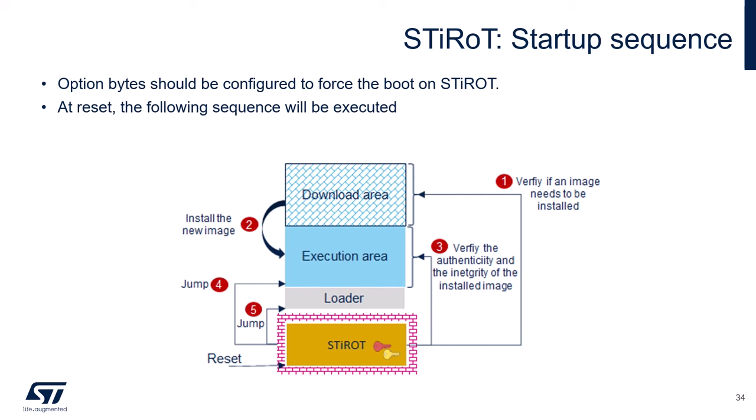Let's now look at the STI-ROT startup sequence at reset. Step 1: verify if a valid image needs to be installed. Step 2: decrypt and install the new image. Step 3: verify the authenticity and integrity of the newly installed image. Step 4: jump and execute the firmware application code. In case of no valid image to install or execute, there is an optional Step 5 — which can be disabled through the STI-ROT configuration — where a reset is generated instead of jumping to the loader.